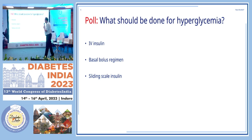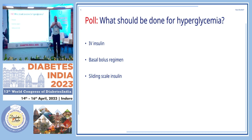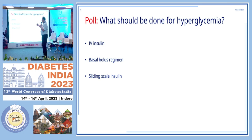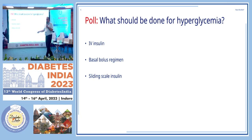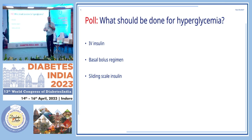What should be done for hyperglycemia? She's posted for surgery — a common scenario where she's not your primary patient, admitted and referred for a cross-consult to manage hyperglycemia. Options: IV insulin, basal bolus regime, or sliding scale? A couple of votes for sliding scale, a couple for basal bolus.